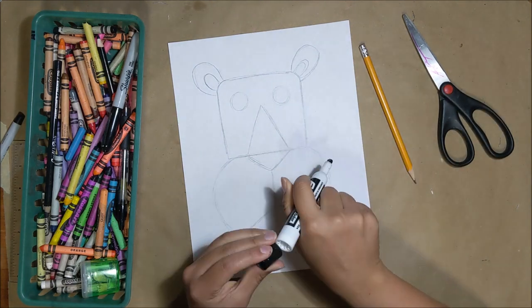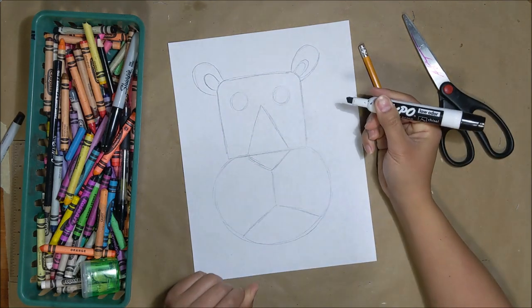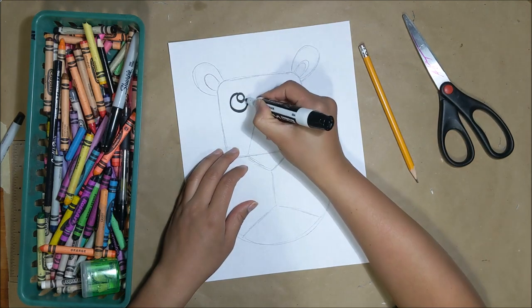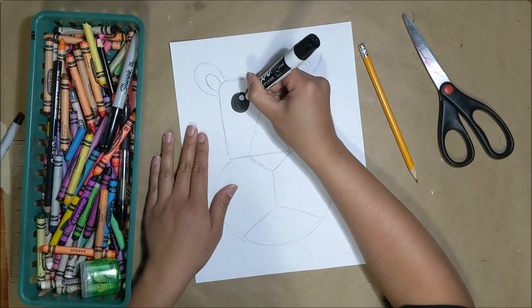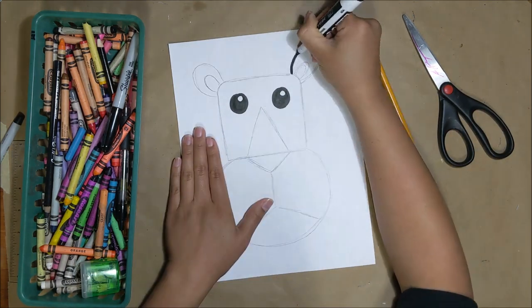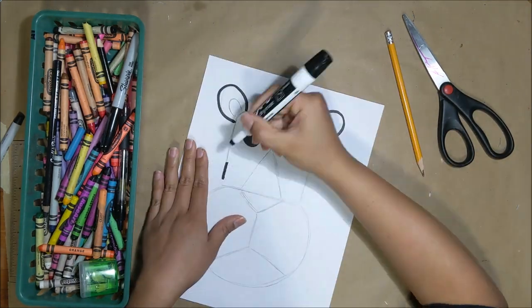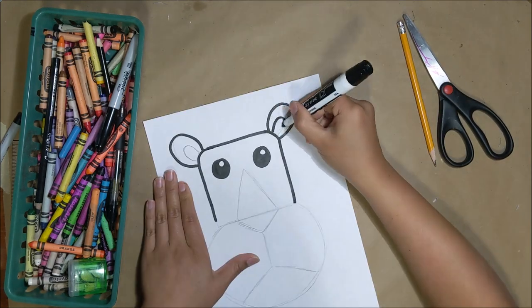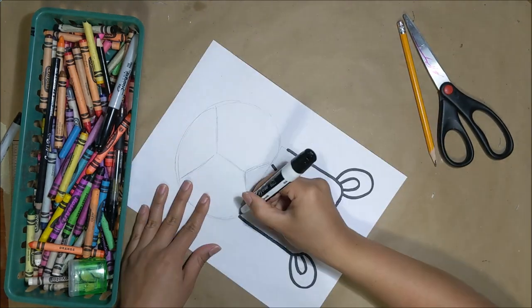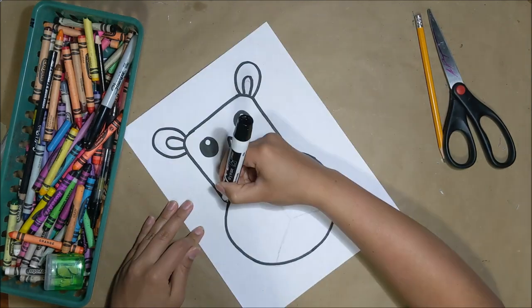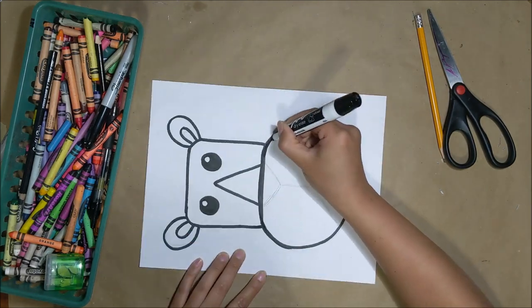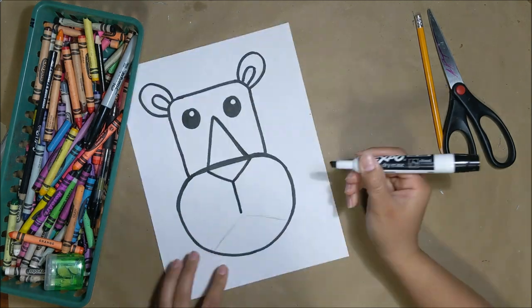Using a thick marker, I'm using an expo marker, we're going to outline all the pencil lines that we just drew in. Remember to leave that white spot in the eyes for the reflection. If you don't have a thick black marker like this, you can always use black crayon. Just make sure to make your outline really thick and dark.